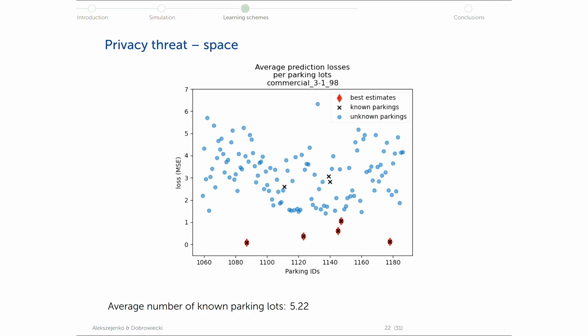Let's see some more interesting results. If we are talking about tracking in space, we want to approximate which are the known parking lots of this vehicle. So we calculated that in the MOST scenario, the average number of visited parking lots is about five. So let's focus on five parking lots and select them. And we calculated the loss per parking IDs and selected the five parking lots with the least loss.